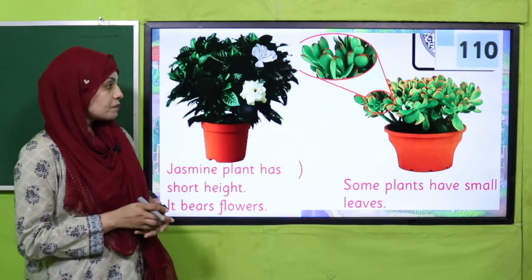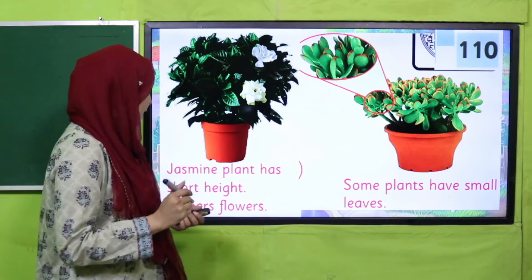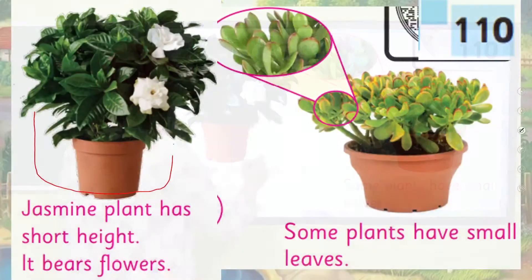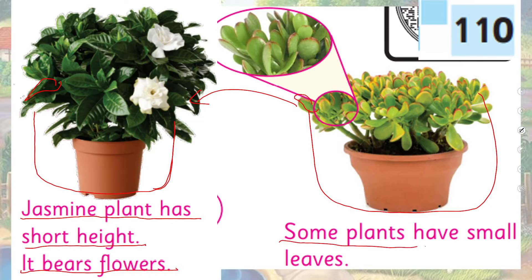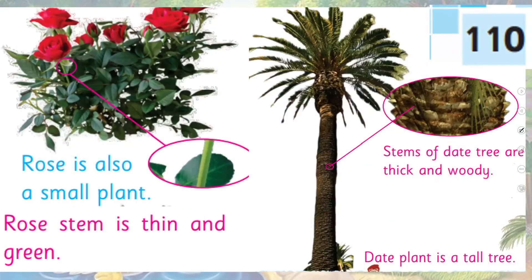Now look at these plants and let's read about them. Here you can see this plant has flowers on it and its leaves are dark green in color. This other plant has no flowers visible, and its leaves are quite different from the first. The jasmine plant has a short height and it bears flowers. Some plants have small leaves and some plants have small leaves with no flowers on them.